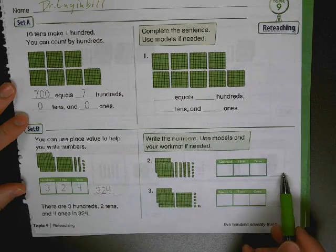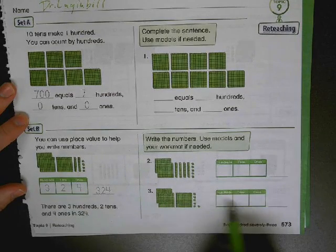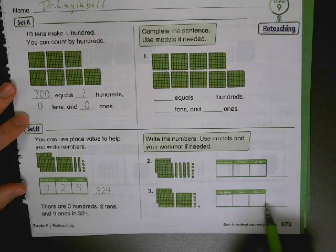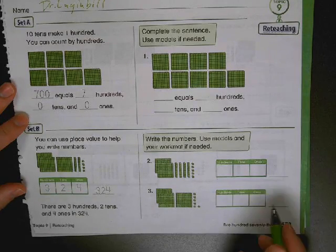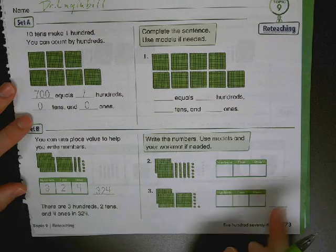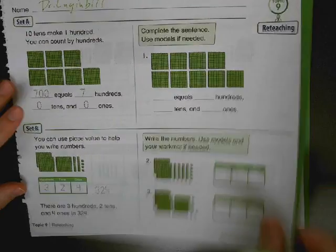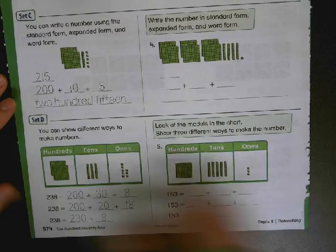Identify how many hundreds, how many tens — and if you don't see any tens, make sure you indicate that in your number. Then how many ones, and that's your number — transfer it over to the line. Same here: how many hundreds, how many tens, oh gosh, I don't see any, and then how many ones. Go ahead and pause the video and knock those out real quick.